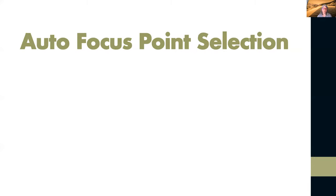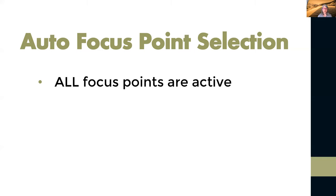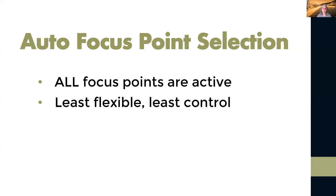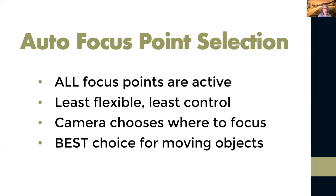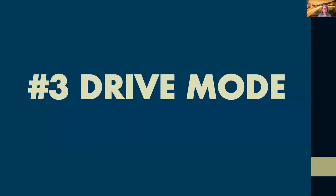The last focus area option is all focus points, where every point your camera has is active — giving more control to the camera to choose where to focus over the entire scene. Best for rapidly moving, randomly changing direction subjects. Funny enough, this is also the mode I put my camera in when I hand it to somebody else to take my picture — because I've gotten too many out-of-focus pictures of myself when I'm traveling with a single point set, and they focus on the background.